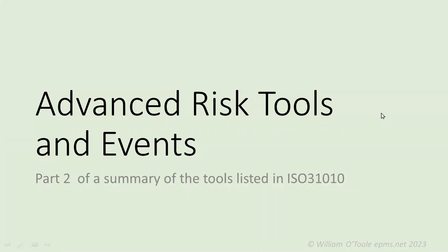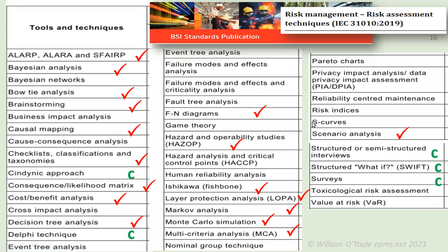Hi there, this is Bill O'Toole and this is part two of the summary of the tools listed in ISO 31010. These are advanced risk tools and I'm applying them to events. This is the list of the tools — if you remember in part one I showed you this — and you can find ISO 31010 online. You pay for it and these are the tools that they're recommending. For an events person, a lot of these are mathematical ones, and with my background in mathematics and events I'll be able to explain quite a few of them to you, so you can decide whether you want to use them for your next festival or event.